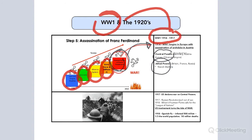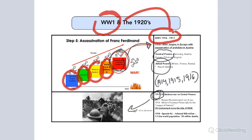Did the United States get involved immediately? No, we waited. The war starts in 1914, 1915, 1916 — we didn't get involved until 1917, so we waited three years. This was a very costly and violent war — trench warfare. We do get involved in 1917, and it was that U.S. involvement that sort of turned the tide.